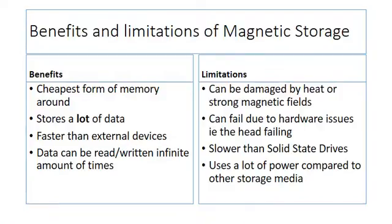So we've got some benefits and some limitations of magnetic storage. The most obvious benefit is that it is the cheapest form of memory around, because it's been around for a long time, it's been refined, and it's easy to create. It can also store a lot of data — commercially you can still buy magnetic drives of over five terabytes, which is a lot of storage space.